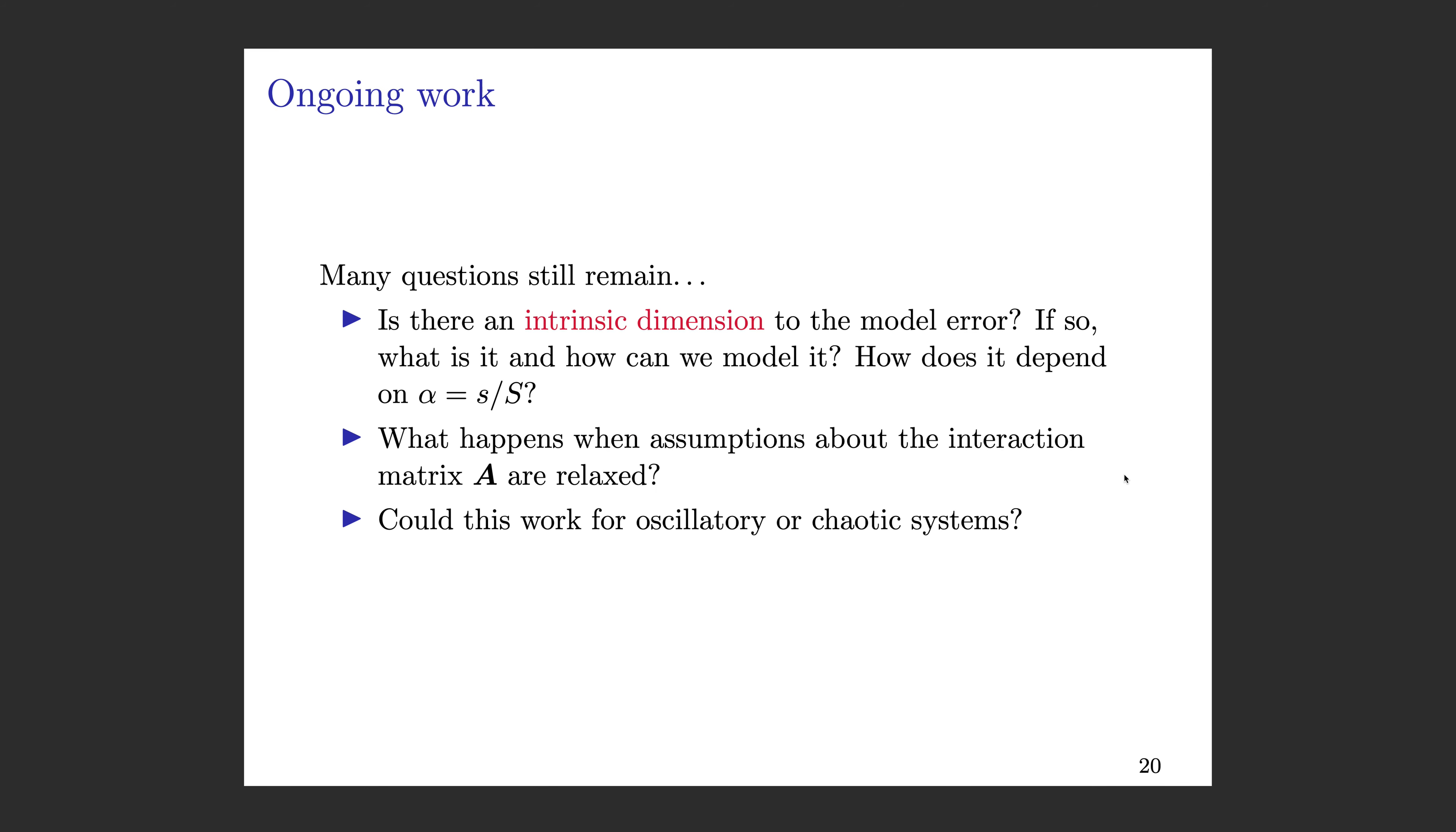There's a lot of questions that still remain in this work. One thing that is very interesting is to ask, is there some intrinsic or effective dimension to the model error? What is it? How can we model it? What variables should it really depend on? How does it depend on the number of species included between the reduced and detailed models? Of course we had some pretty strict assumptions about this interaction matrix A. So what happens when those are relaxed, and related to that, could this work for oscillatory or chaotic systems?